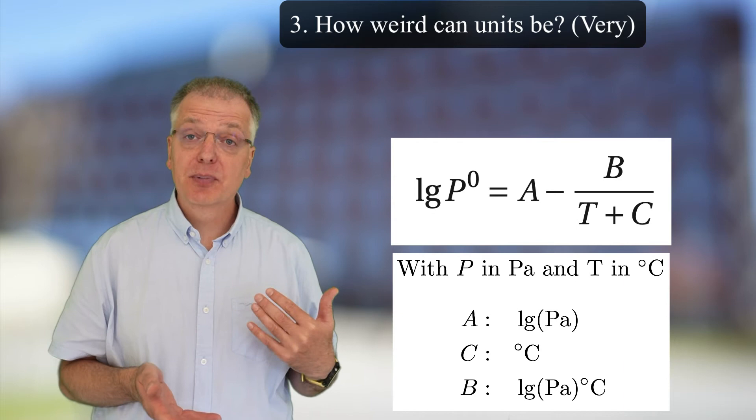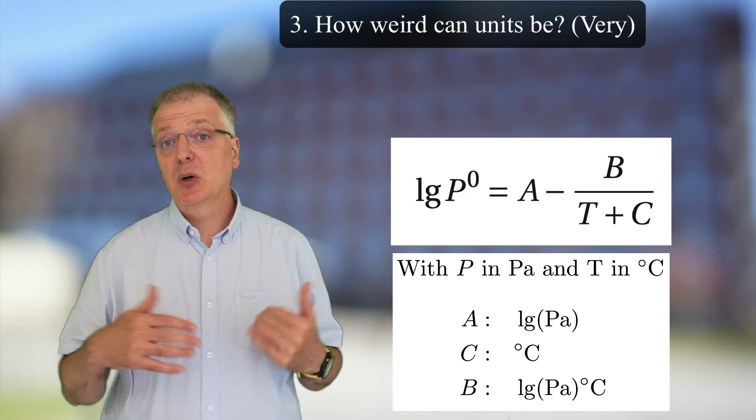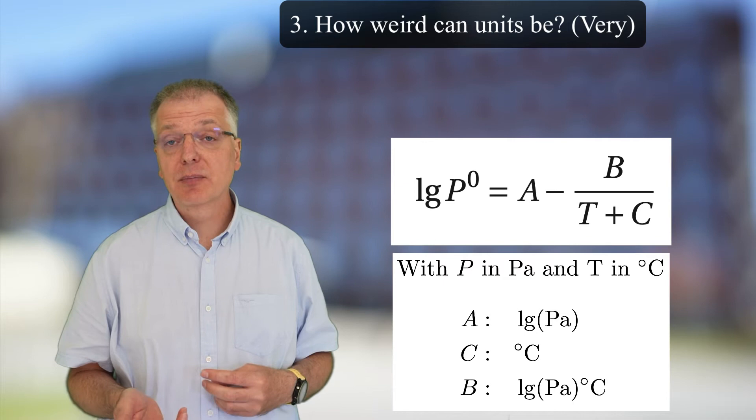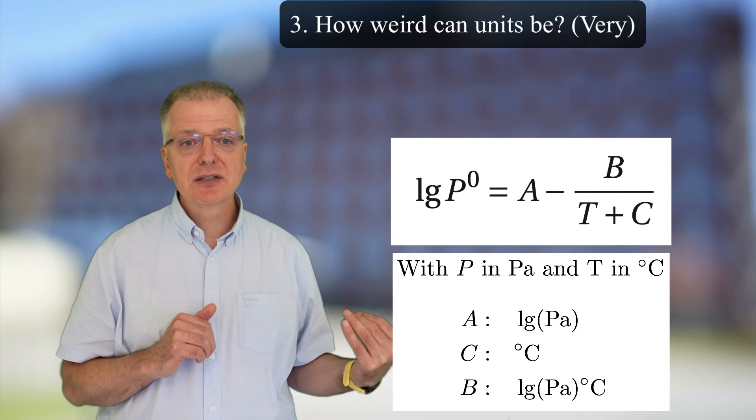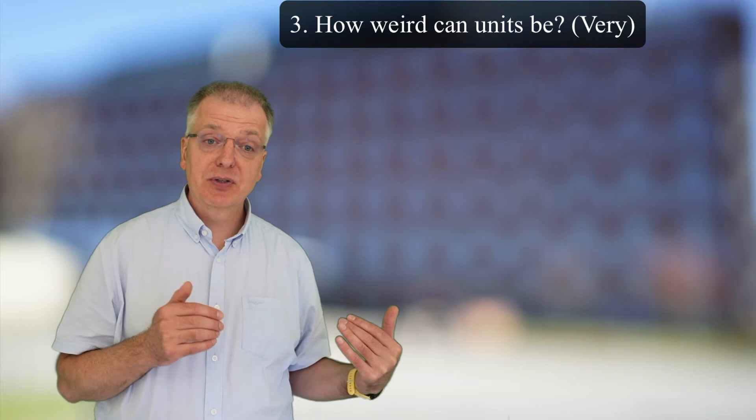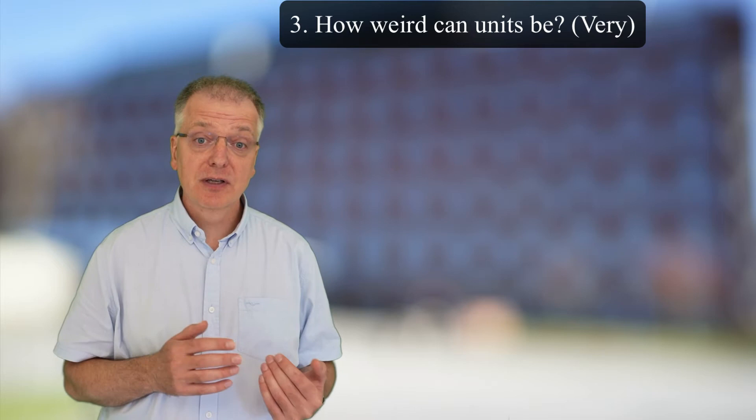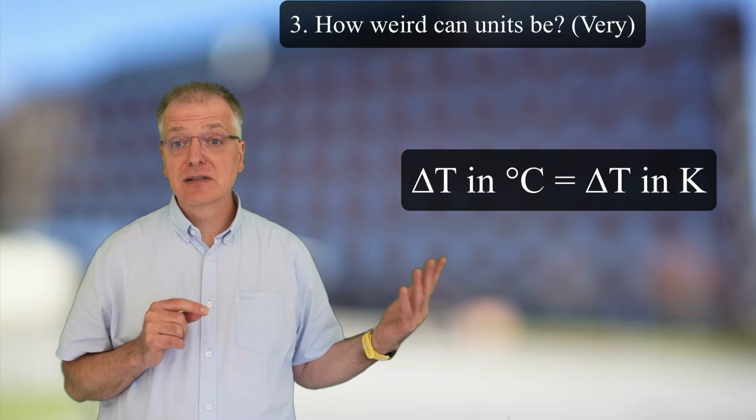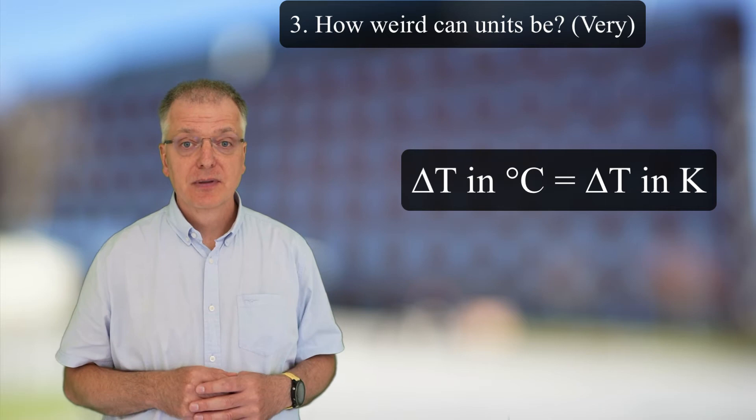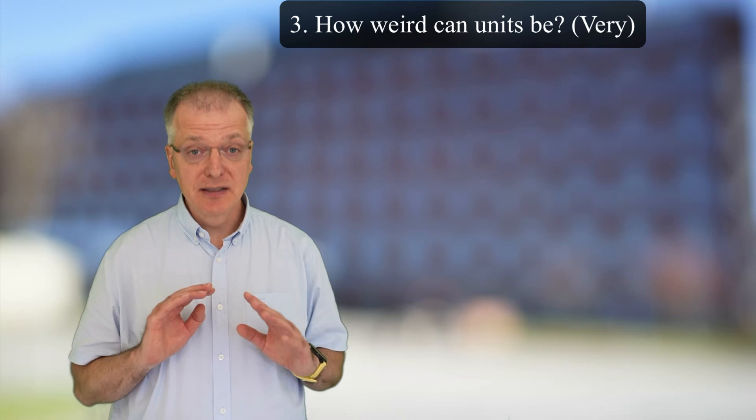So, why are the units of the fitting parameters important? Well, if someone has fitted the same equation using pound per square inch PSI as the unit for pressure and Fahrenheit as the unit for temperature, we need to understand the units of the fitting parameters if we are to change their values so we can use Pascal and Celsius instead. To change from temperature in Celsius to temperature in Kelvin, simply add 273.15 to parameter C. As an important side note, please remember that the difference in Celsius is always numerically identical to difference in Kelvin. So, thus our answer to question 3 is that units can be as weird as they need to be.